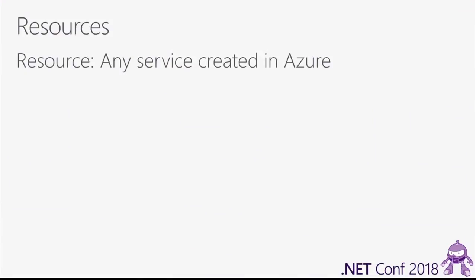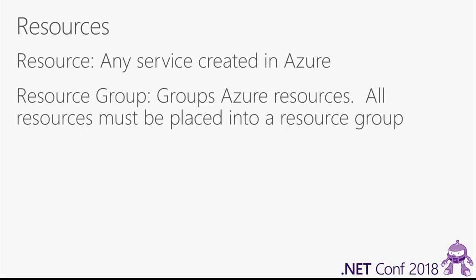A resource is any service you create inside Azure — anything that takes CPU, memory, or storage. Think of it as an instance of a service. Resource groups are a fundamental Azure primitive that groups all your resources together, and every resource you create must be placed into a resource group. Think of it like a folder, or even a namespace.